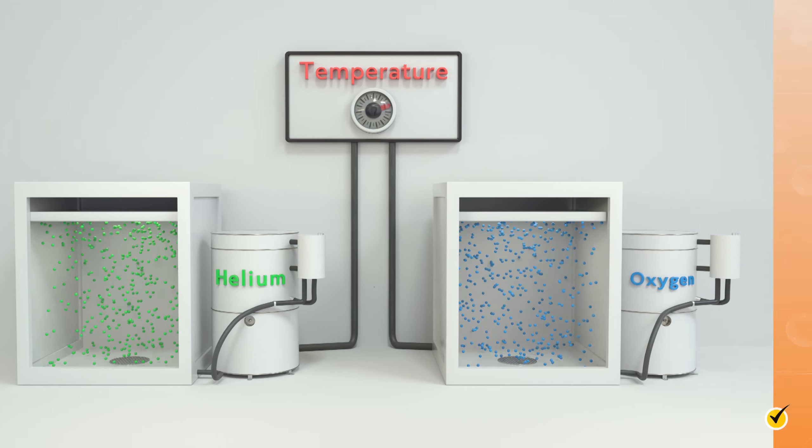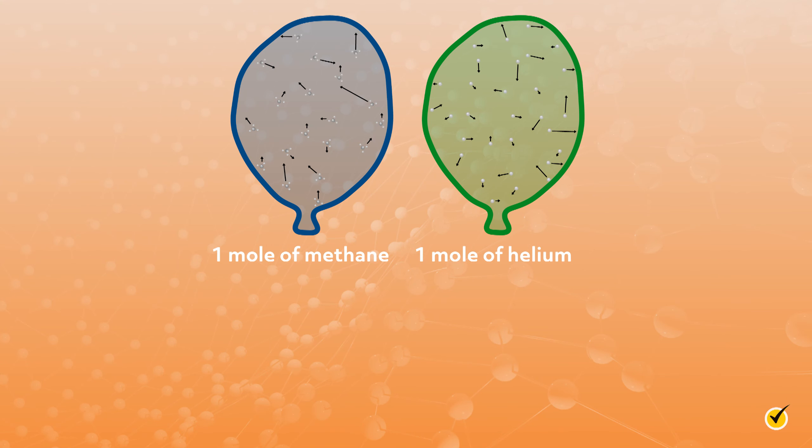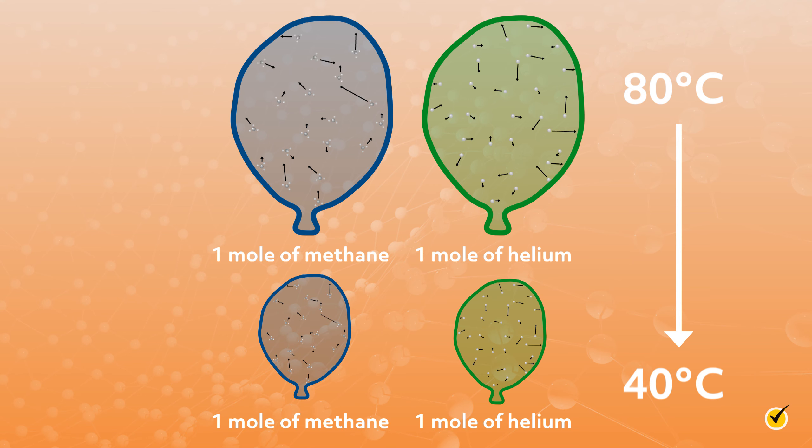So, for example, let's say we have two balloons. The first balloon contains one mole of helium, and the second balloon contains one mole of methane. If both balloons were cooled from 80 degrees Celsius to 40 degrees Celsius, the volume of both balloons would decrease the exact same amount.